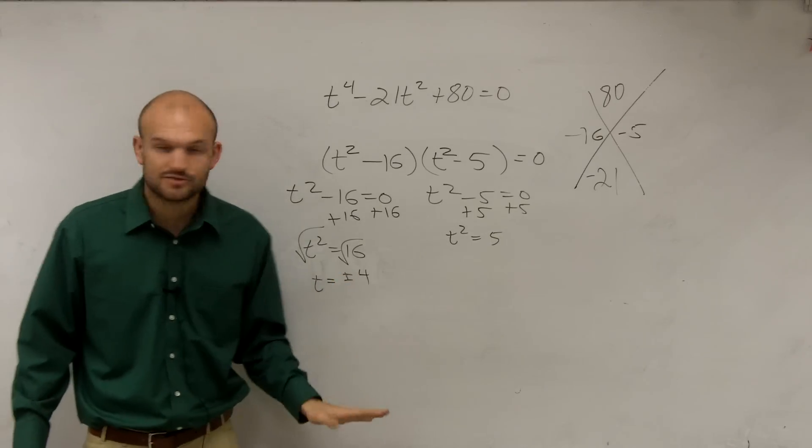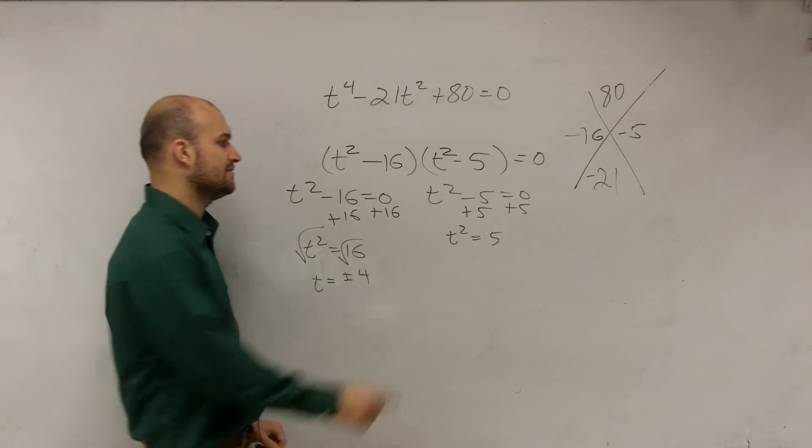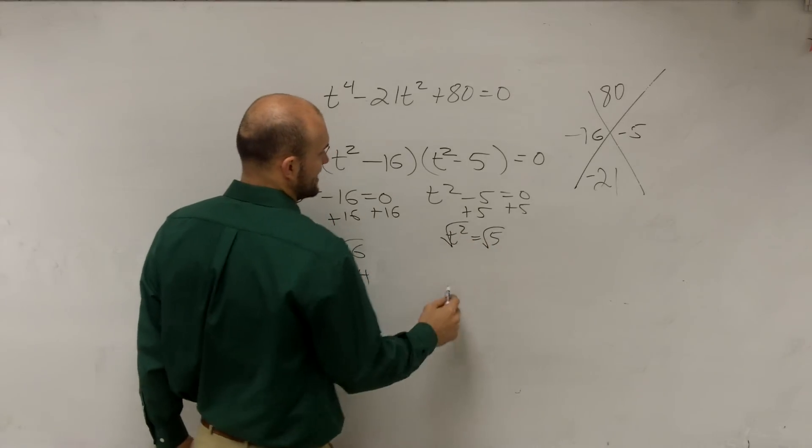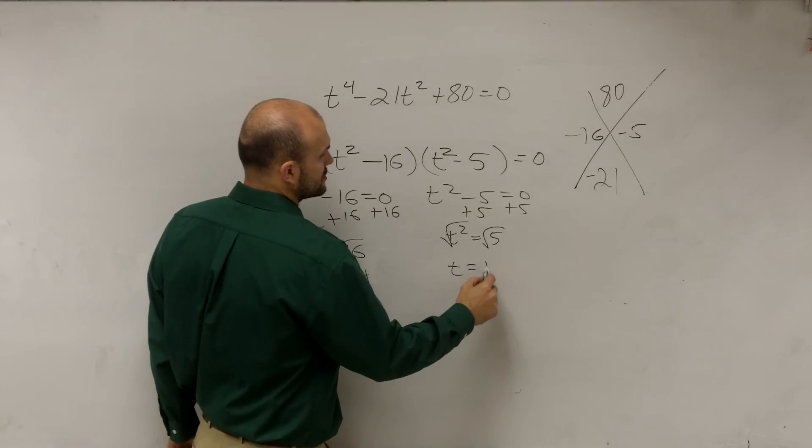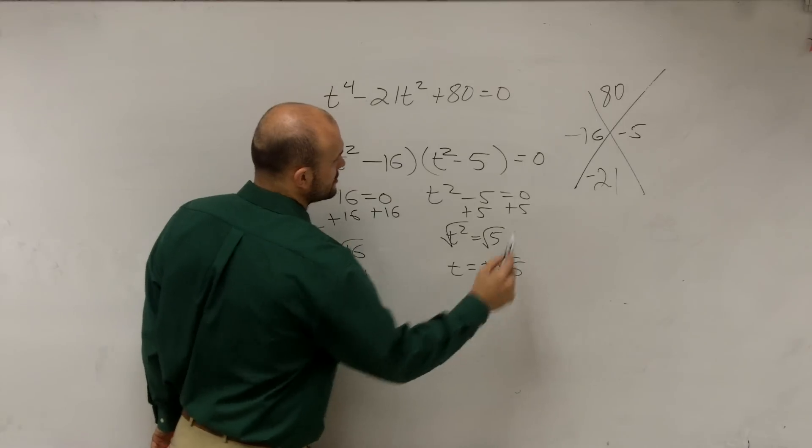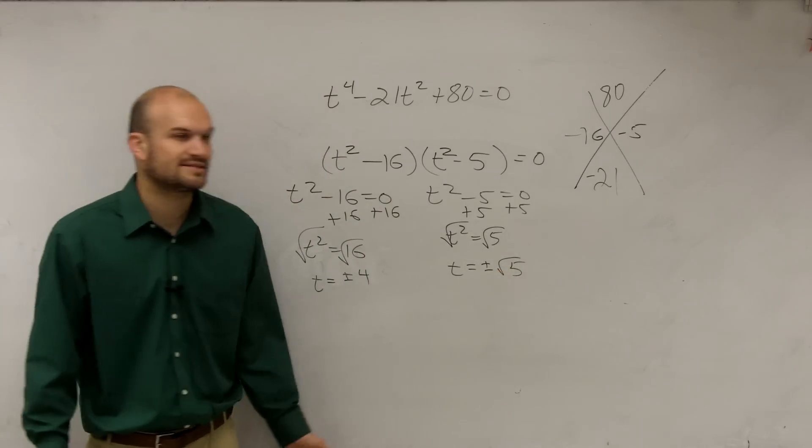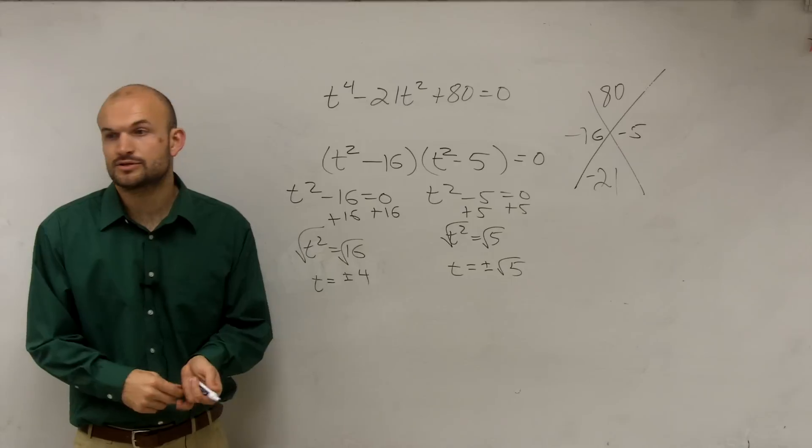Remember, ladies and gentlemen, we're taking the square root. You have to include the positive and the negative. And here, we cannot take the square root of 5, so we're just going to leave that as plus or minus the square root of 5. We want to leave it as an exact answer. So those would be your two solutions.